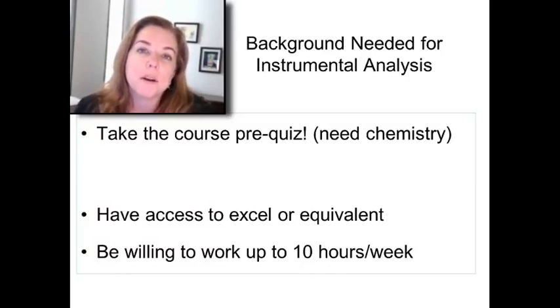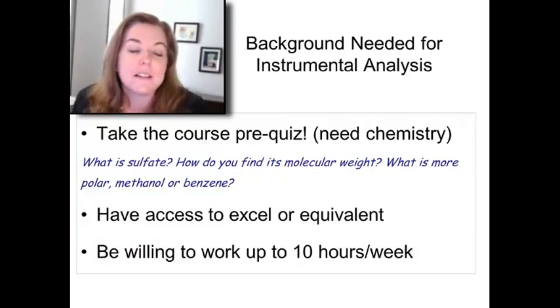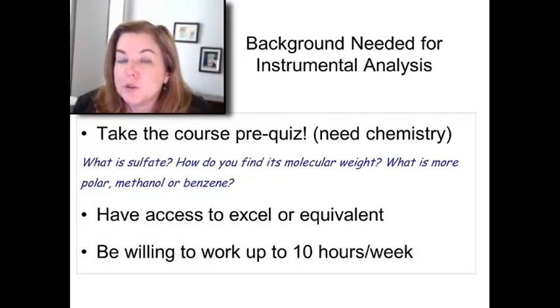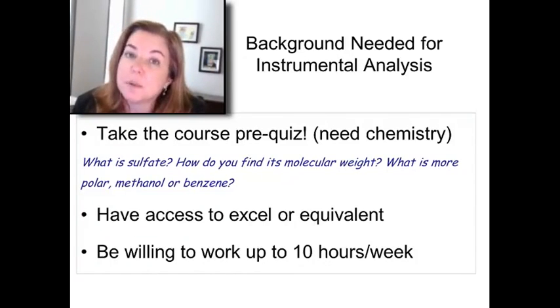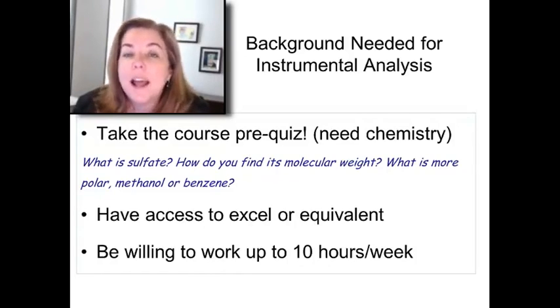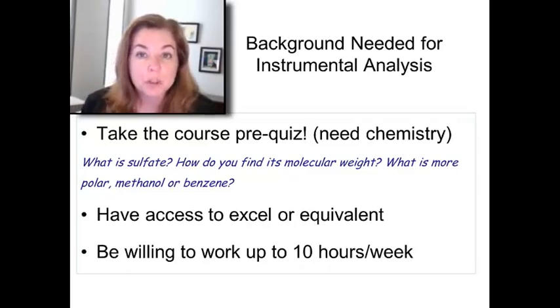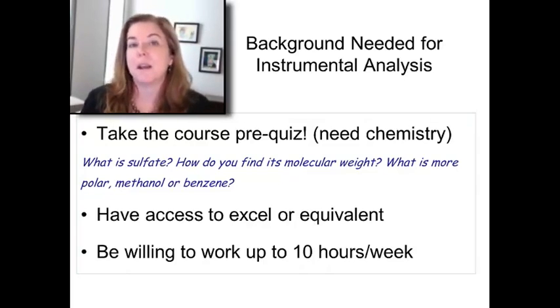That's going to be the most important barrier, I think, for people taking the class. This is an advanced chemistry class designed for people who've already had freshman chemistry. Some of the things you've got to know—you've got to know what sulfate is. It's SO4. It's got a charge of 2 minus. You have to know how to find its molecular weight. Things like polarity of molecules such as methanol and benzene need to be familiar to you. And you may be able to do some of that using Google, but it could get very arduous. If those are questions that seem really foreign to you, this class may not be for you.